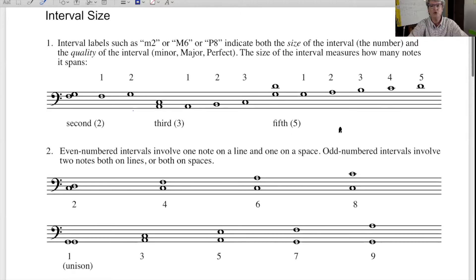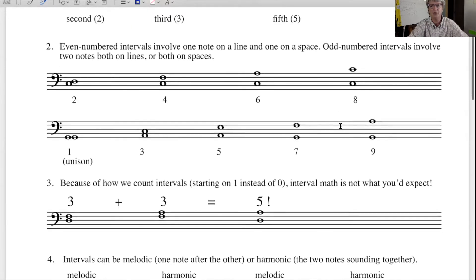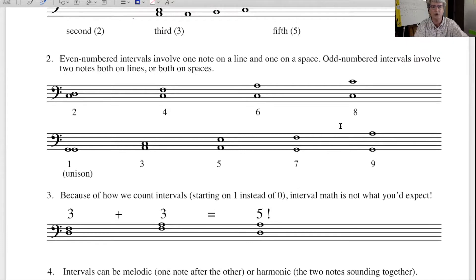You should fairly soon be able to recognize intervals just by looking at them, because they're each going to have a certain look. One of the most obvious features of an interval is whether both notes are on a line or a space, or whether you have one on a line or one on a space. The even numbered intervals, the second, the fourth, the sixth, the octave, these all will have one interval on a line and one on a space.